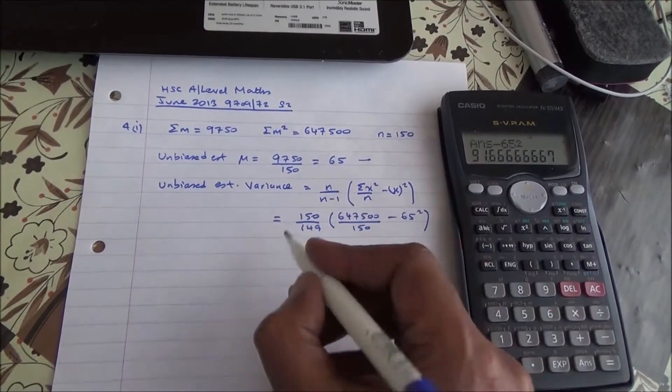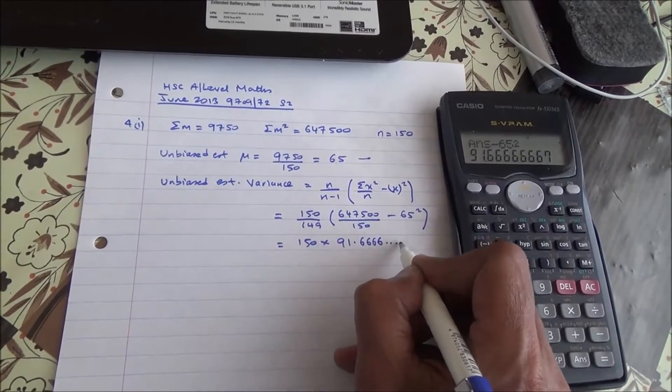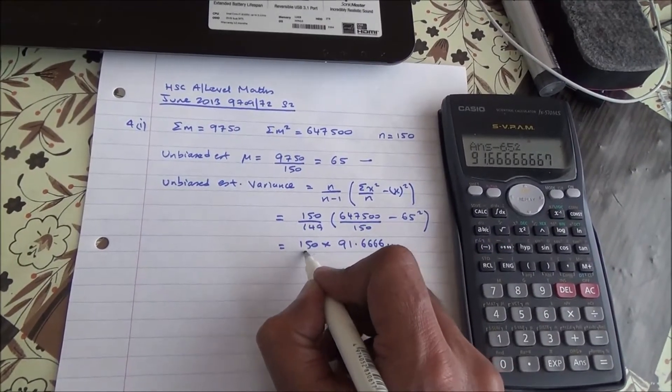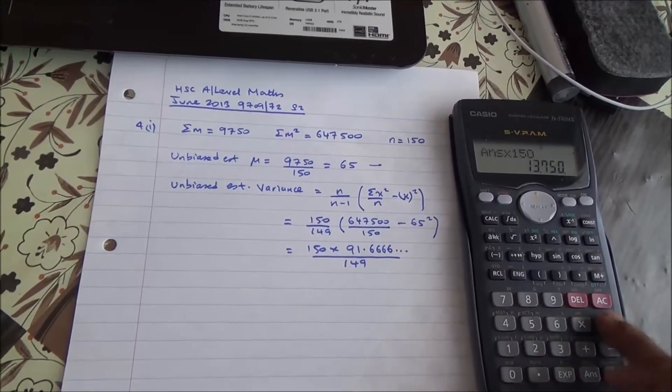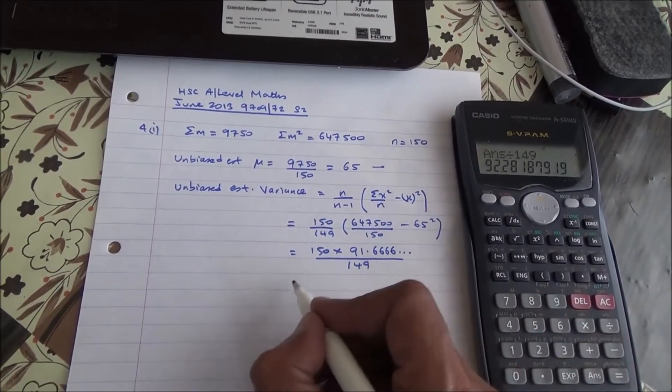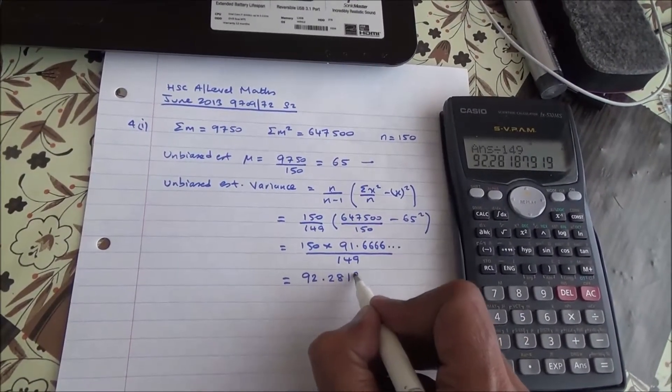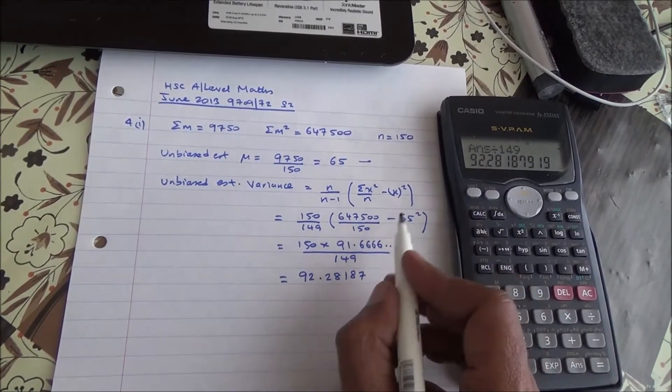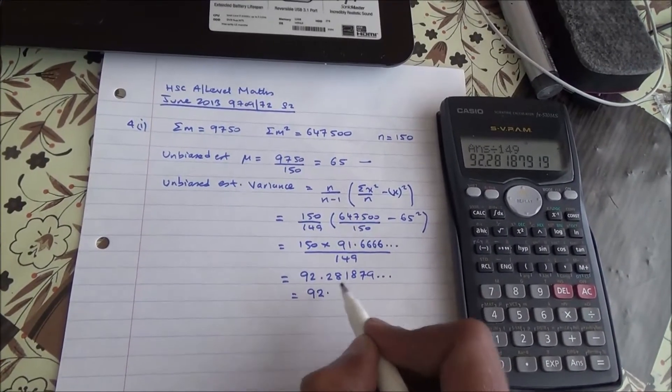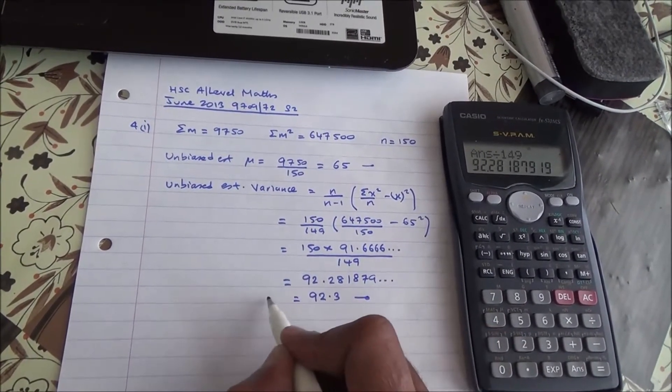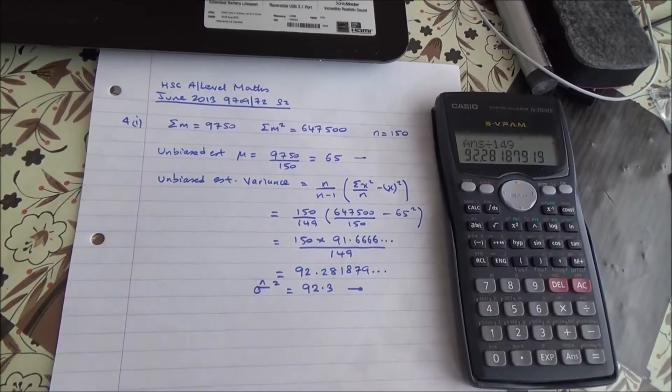We're going to take 150 times 91.666 and so on, and all divided by 149. So here we are, that's going to be 92.28187, 2.81879, and so on. We can confidently say 92.3, and that's going to be an unbiased estimate of the population variance.